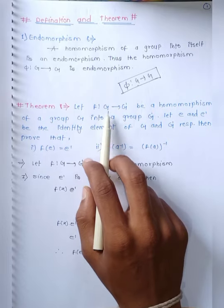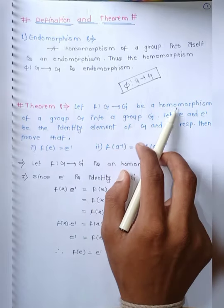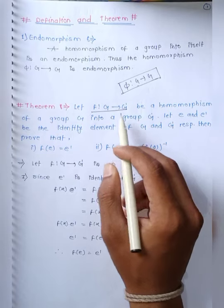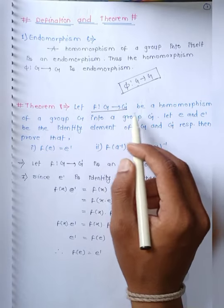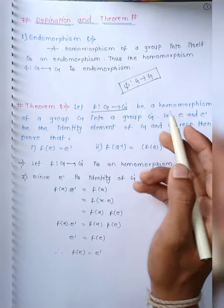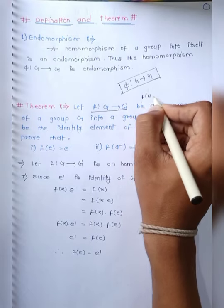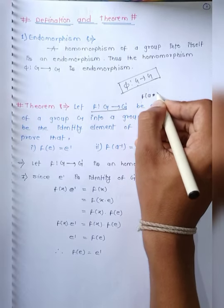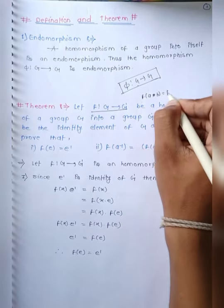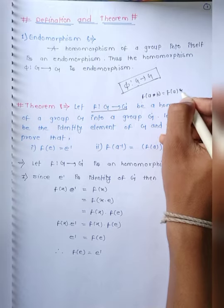F is a mapping from G to G', be a homomorphism. The homomorphism condition satisfied: F of A star B equals to F of A star F of B.